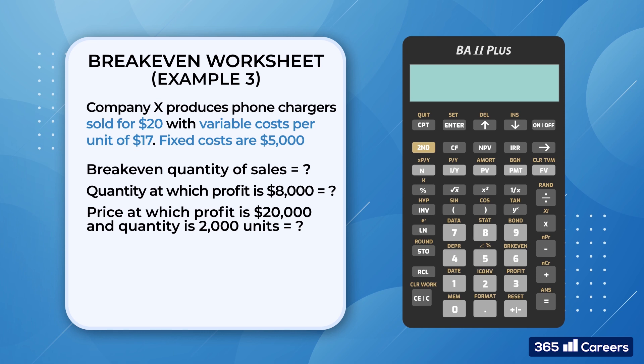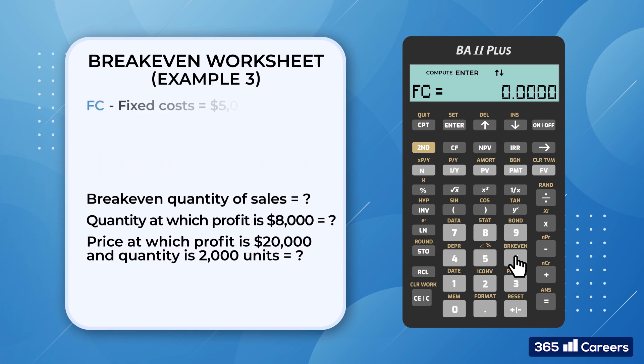Alright, first things first. To access the break-even worksheet, we press second break-even, which is the second function of key six. Let's provide the parameters we know, and solve the answer to the first question. FC, the fixed costs, is $5,000. The variable cost per unit, VC, is $17, and the price, P, is $20.